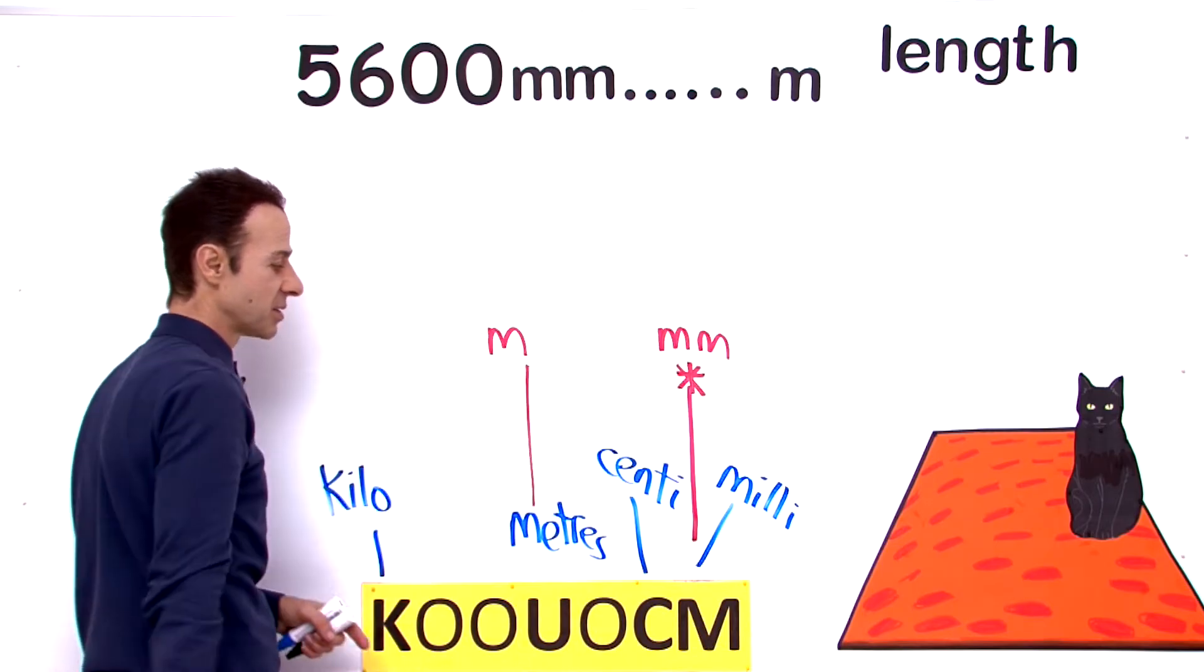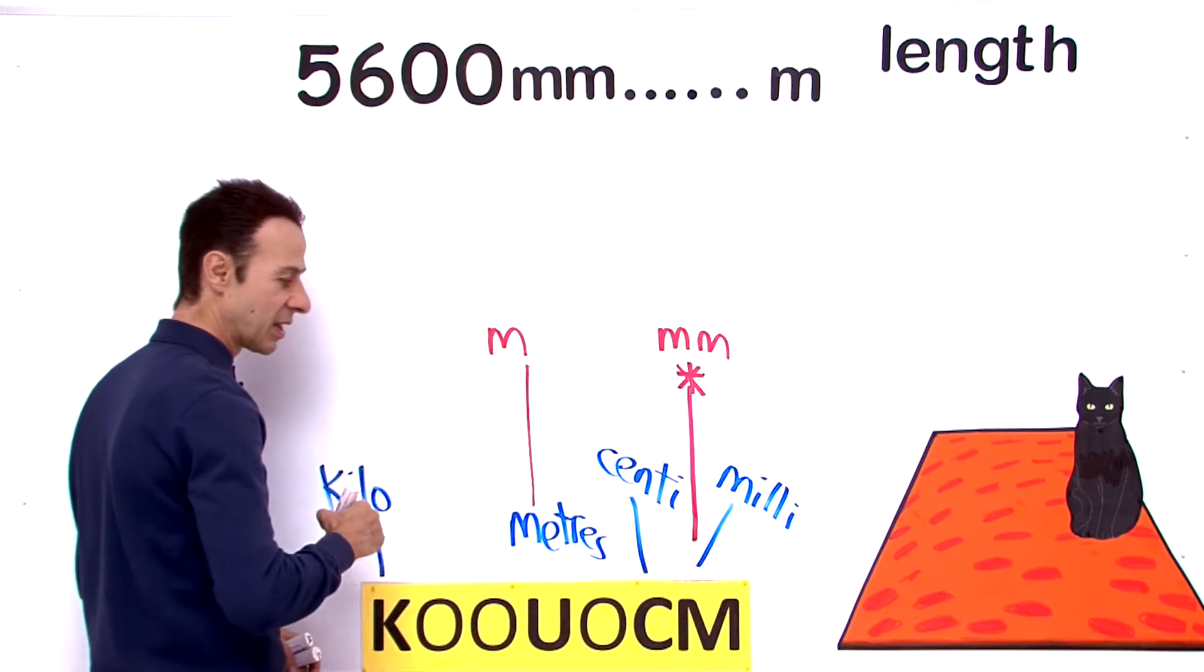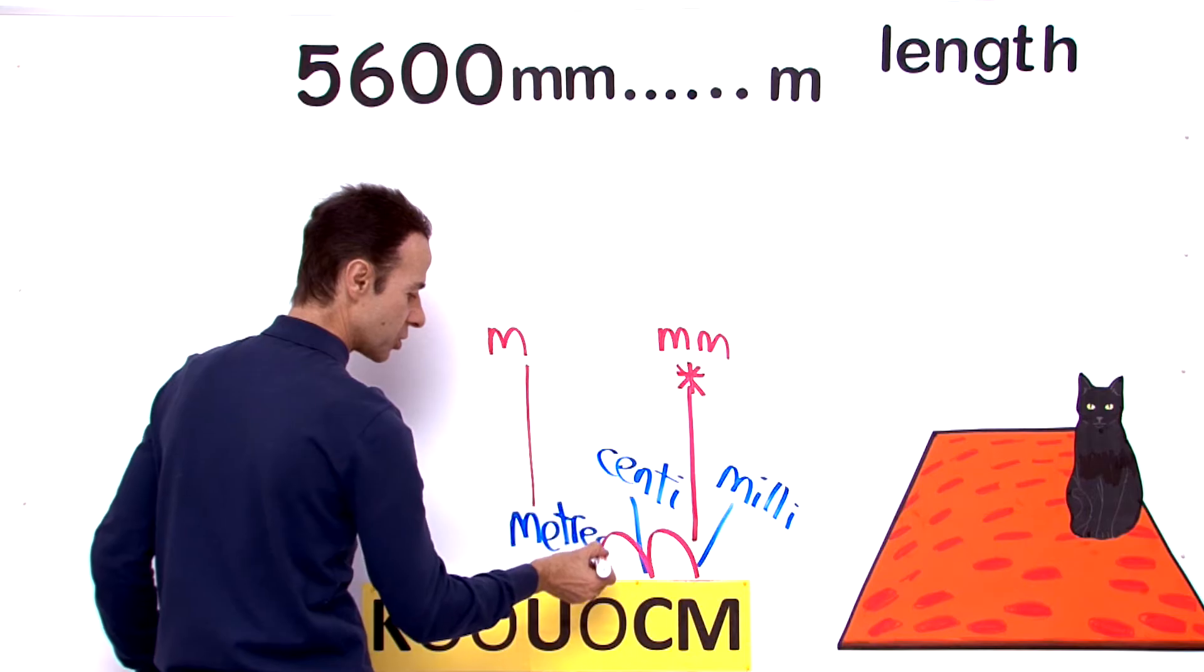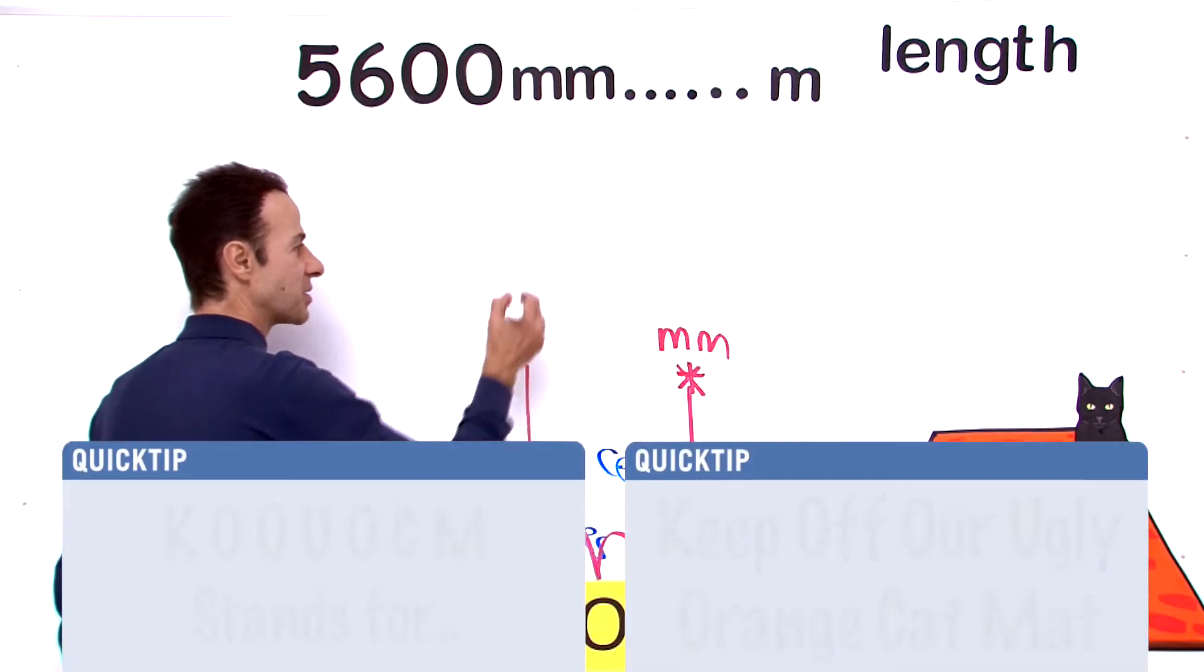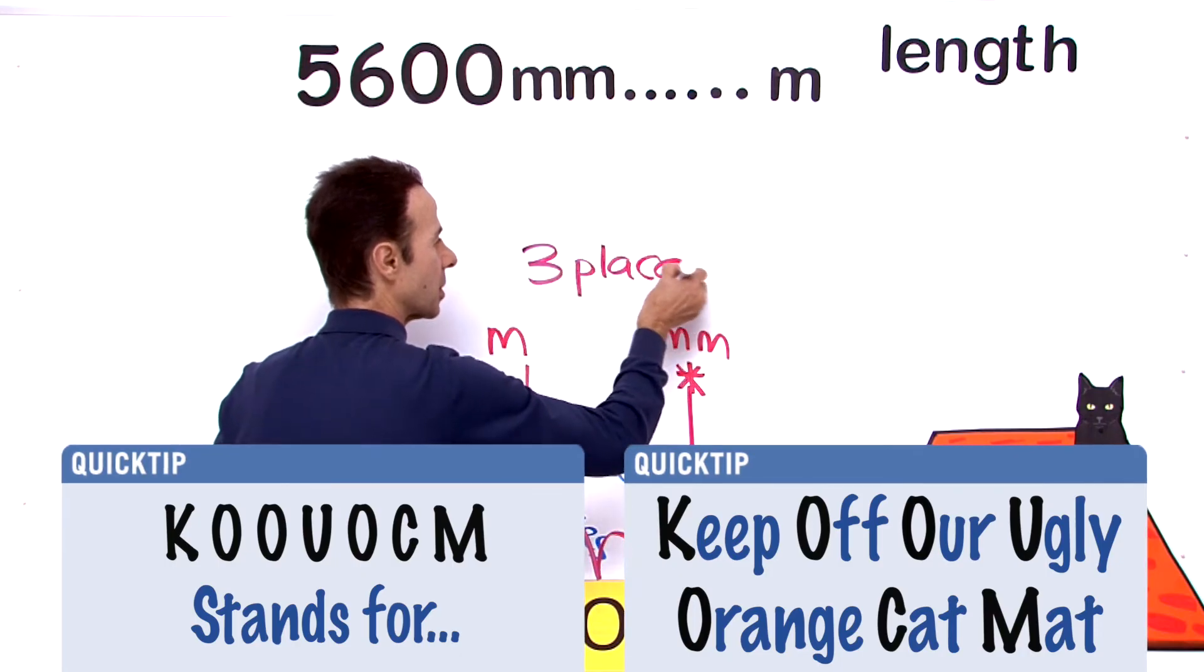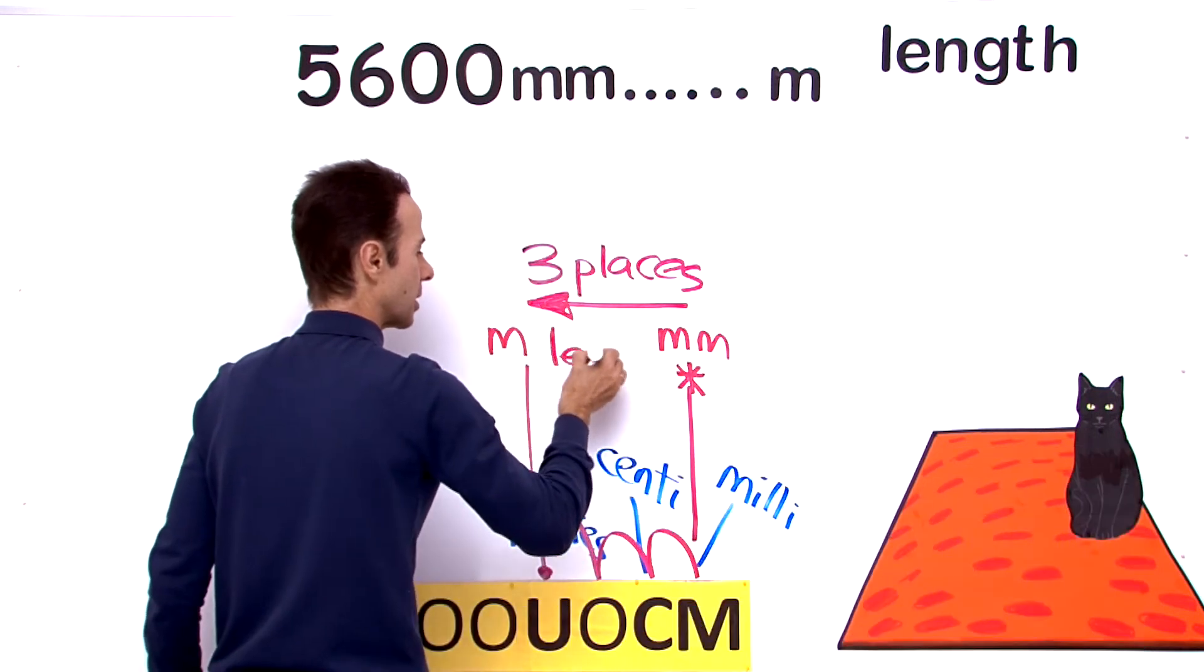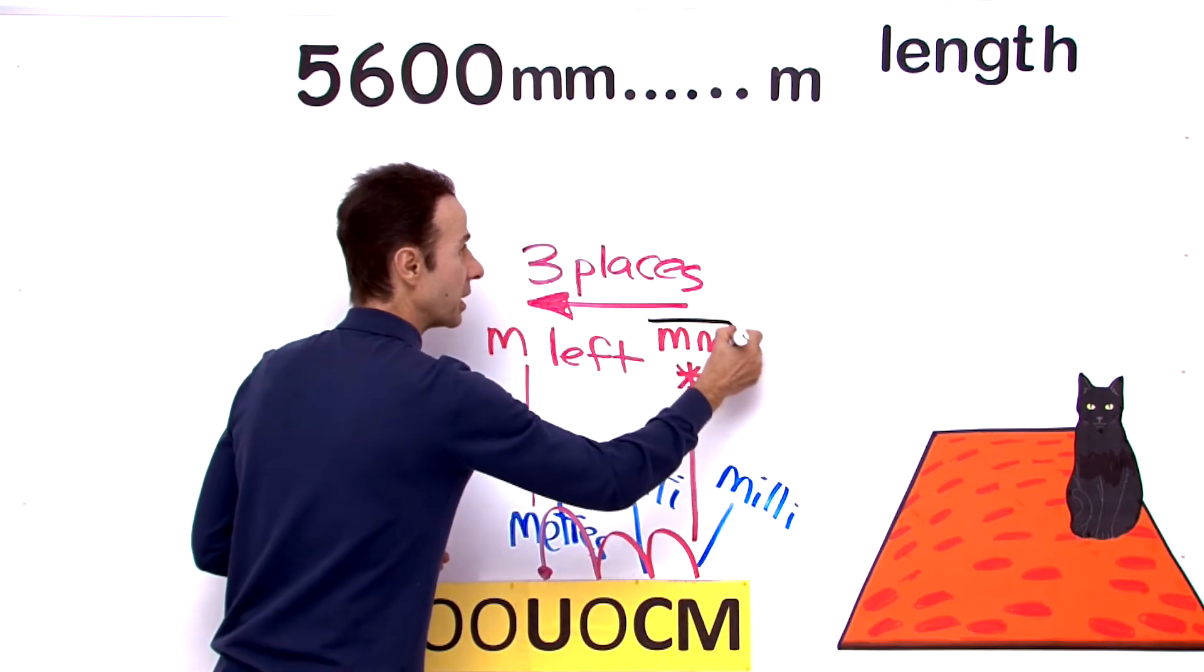So we are going to go from millimeters to meters. Let's count how many places from millimeters to meters. We are moving to the left, so we started in millimeters: 1, 2, 3 right here to get to meters. So we are moving 3 places, 3 places to the left from millimeters to meters.